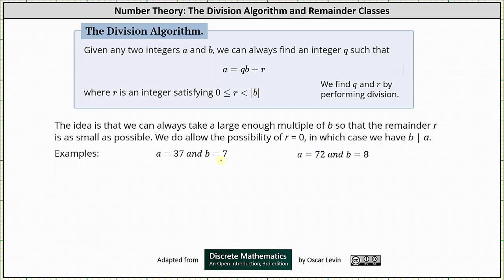Let's look at two examples. For the first example, we are given a equals 37 and b equals seven. We want to write the equation a equals q times b plus r. To find q and r, we divide 37 by seven. There are five sevens in 37; five times seven is 35. We subtract, and the difference is two, which indicates the remainder is two. So 37 divided by seven equals five with a remainder of two, meaning q is five and r is two. The equation is: 37 equals five times seven plus two.